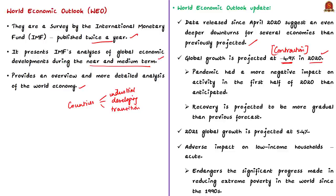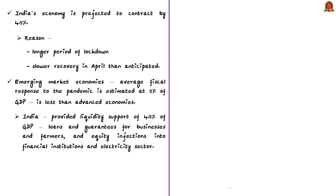The report notes that the pandemic had a more negative impact on activity in the first half of 2020 than anticipated, and recovery is projected to be more gradual. In 2021, global growth is projected at 5.4%. The report also notes that the adverse impact on low-income households across the world is very severe, endangering significant progress made in reducing extreme poverty since the 1990s. India's economy is projected to contract by 4.5%, due to the longer period of lockdown and a slower recovery than anticipated.